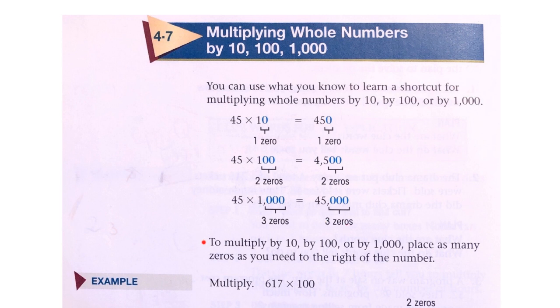To multiply by 10, by 100, or by 1000, place as many zeros as you need to the right of the number.